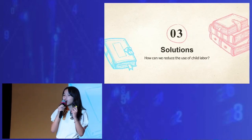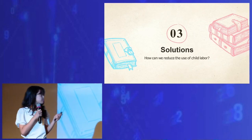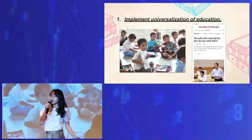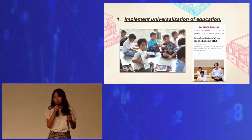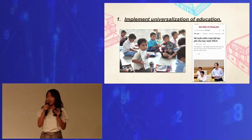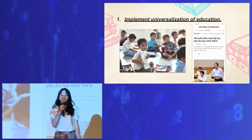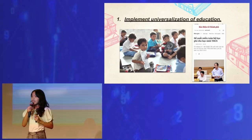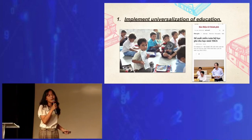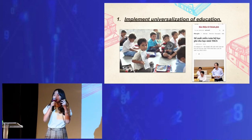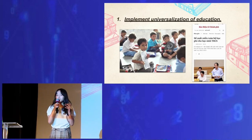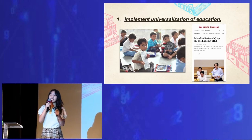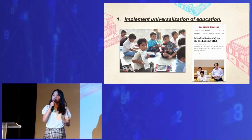Last but not least are the short and long-term solutions. First is to implement the universalization of education. You all know that education is a fundamental right for every child, but not every child gets to receive this education due to the areas they live in. For example, in mountainous areas, there is a shortage of schools due to rocky roads. Governments can help by establishing schools with lower school fees. An example in Vietnam is when seven provinces and cities announced reductions in school fees for every child.